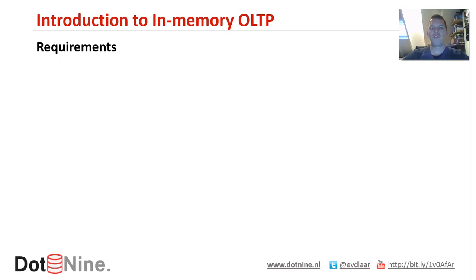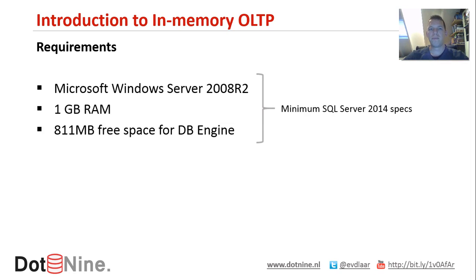First, the requirements. What do we need to run in-memory OLTP on our SQL Server 2014 system? We'll need a Microsoft Windows Server 2008 R2, 1 GB of RAM, and 811 MB of free space just for the database engine. As you can see, these are just the minimum specs of SQL Server 2014 — and by minimal, I mean really, really minimal, because 1 GB of RAM isn't really common.